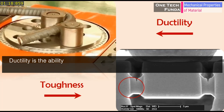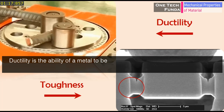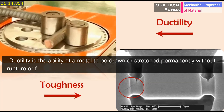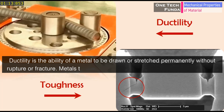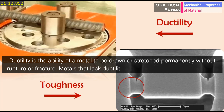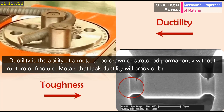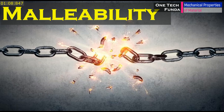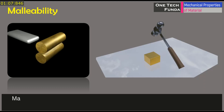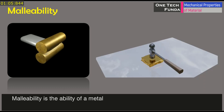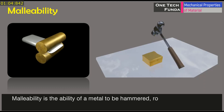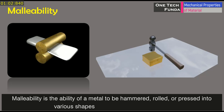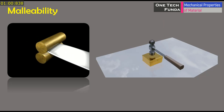Ductility is the ability of a metal to be drawn or stretched permanently without rupture or fracture. Metals that lack ductility will crack or break before bending. Malleability is the ability of a metal to be hammered, rolled, or pressed into various shapes without rupture or fracture.